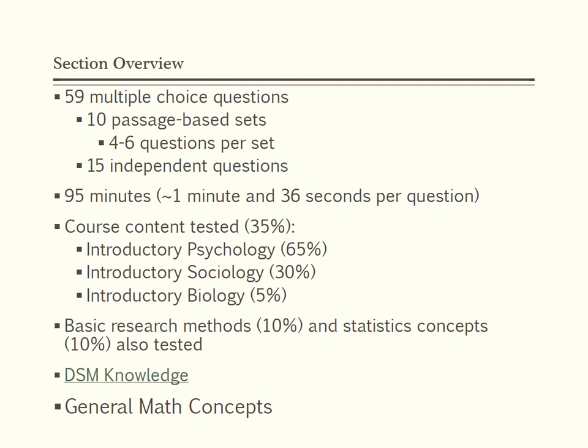35% of this section tests actual content knowledge, 45% tests scientific reasoning and problem solving, 10% tests reasoning about research design, and 10% tests data-based statistical reasoning. About 5% of this section will include psychology questions that are biologically relevant — in addition to the 5% discipline target for introductory biology, meaning 5% of the 65% psychology content is biologically relevant. The content is shared in order of prevalence to help you make your study plan — build weaker areas that are more prevalent. For example, if weakest in biology and psychology, work on psychology first, since introductory biology is only 5% to 10% of questions.